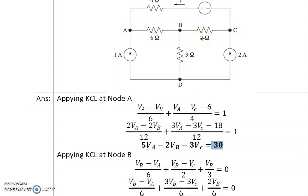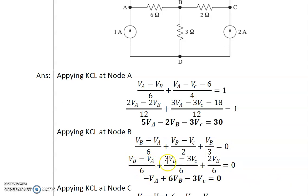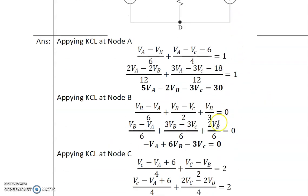VD is zero potential, so the term becomes VB/3. LCM of 6, 2, and 3 is 6. Multiplying through: (VB minus VA)/6 + 3(VB minus VC)/6 + 2VB/6 = 0. This gives: minus VA + VB + 3VB + 2VB minus 3VC = 0, that is: minus VA + 6VB minus 3VC = 0. This is the second equation.